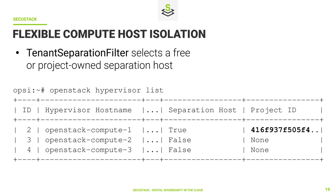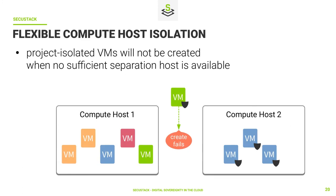The blue project has now allocated the separation host, as seen in the CLI example — the project ID is now known, in contrast to earlier when the separation host was not yet allocated. If the green project now also wants to create a project isolated VM, the scheduler returns that there are no valid hosts available and the creation will fail. The scheduler tries to select a separation host for the green project's instance. The left compute host is not a separation host, so it will not be selected. The right host is a separation host but is already dedicated to a project — the scheduler checks whether the green VM's project ID matches the compute host's metadata, but it was the blue project's ID, so there is no match, and the creation of the green VM fails.